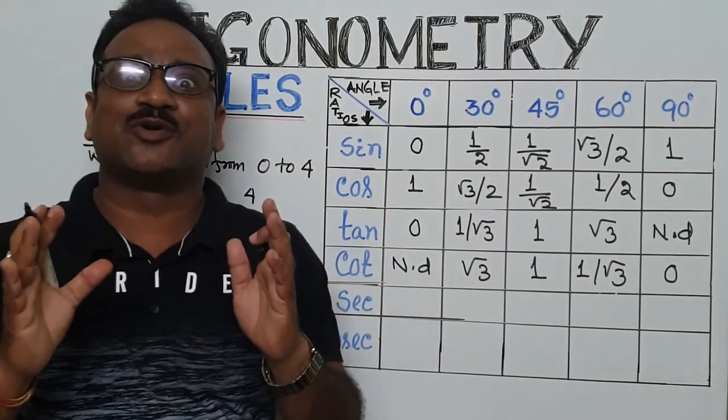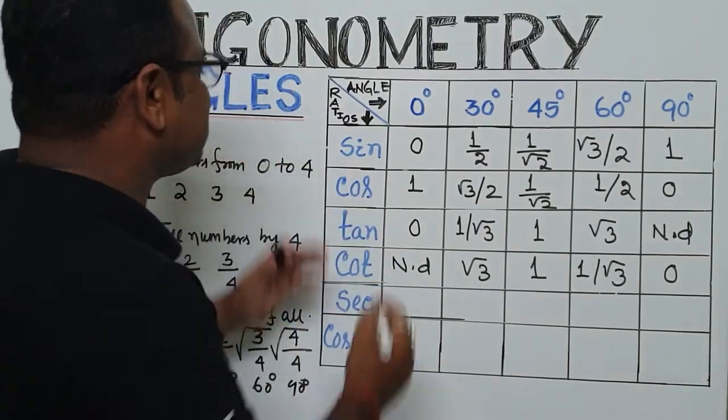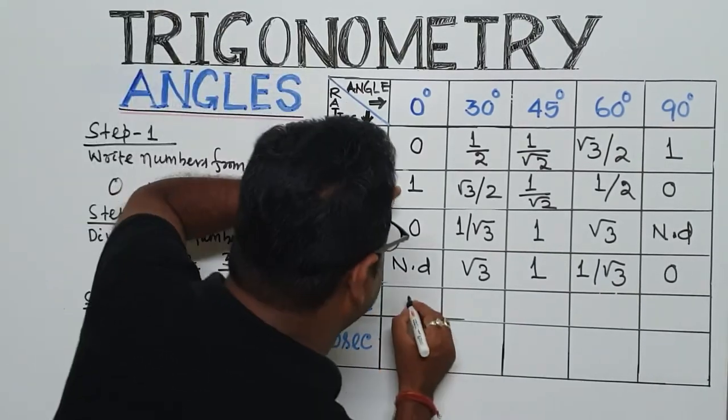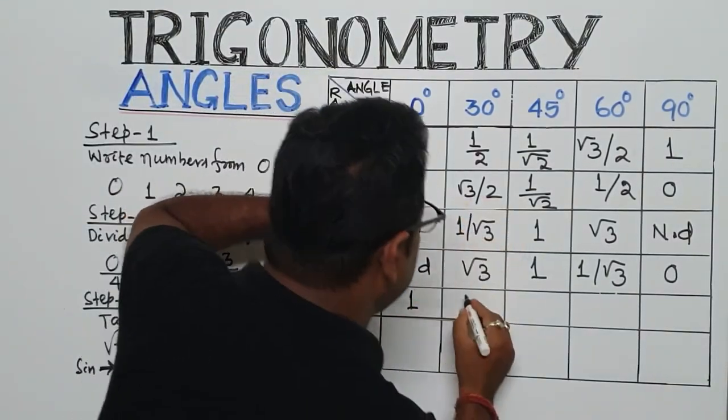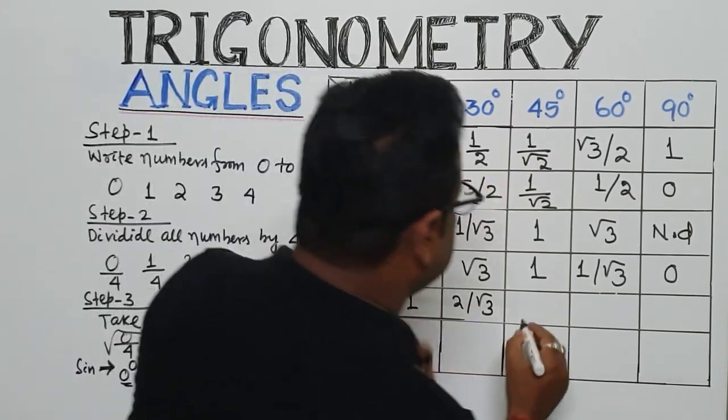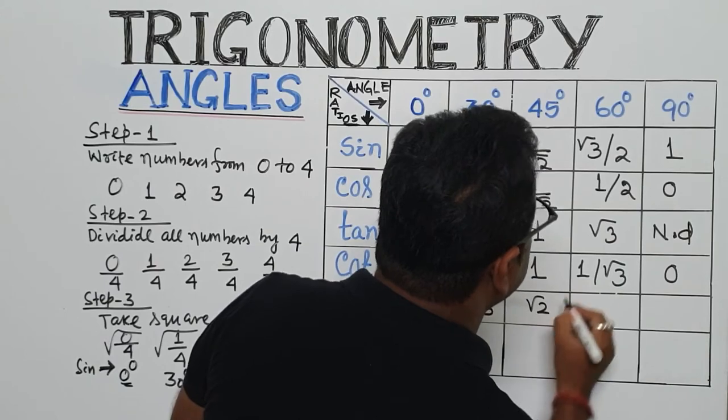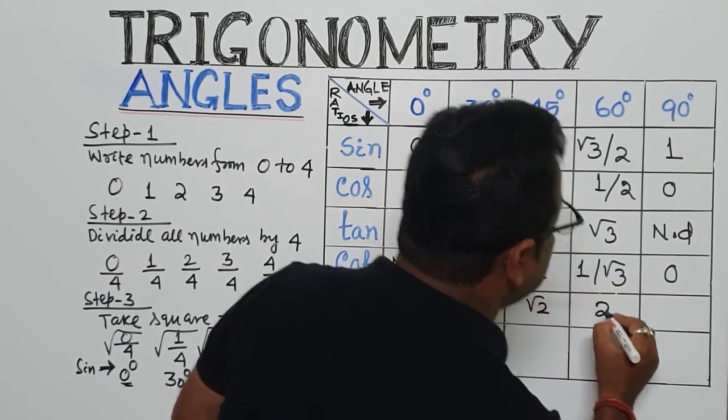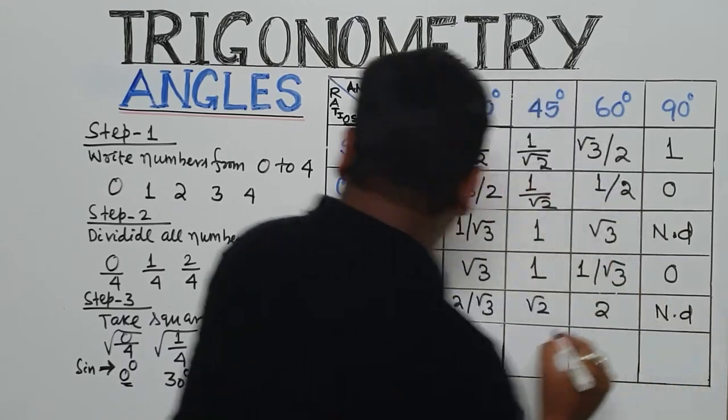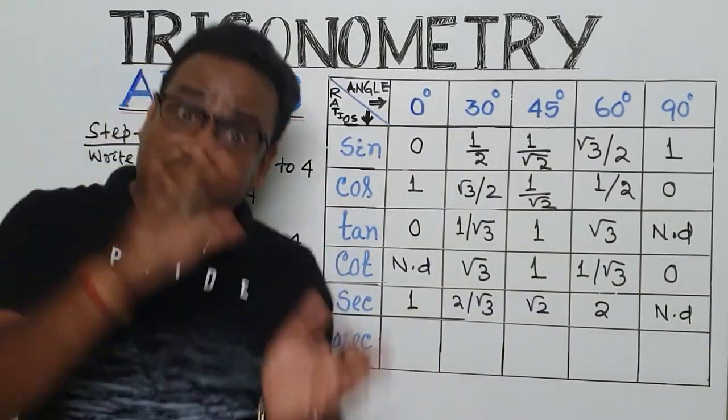So now, we find out the angle of the sec. Sec, we know, sec is 1 by cos. So, 1 by cos, 1 by 1 is 1. Now, 1 by root 3 by 2 is 2 by root 3. Now, here is root 2, here 2. Now, 1 by 0, this is your not defined.